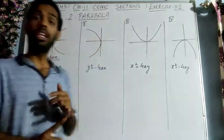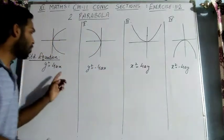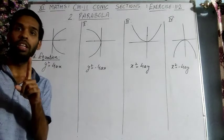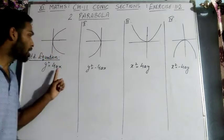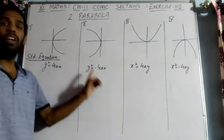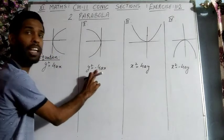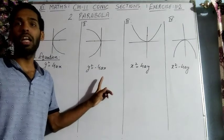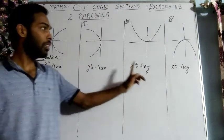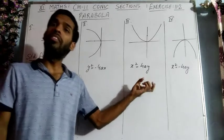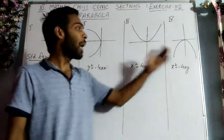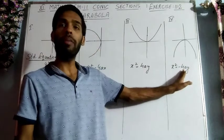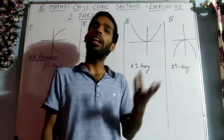The linear variable determines the axis of symmetry. If x is the linear term and its coefficient is positive, the parabola is symmetrical about the positive x-axis; if negative, about the negative x-axis. Similarly, if y is the linear term, positive coefficient means symmetrical about positive y-axis, and negative means symmetrical about negative y-axis.